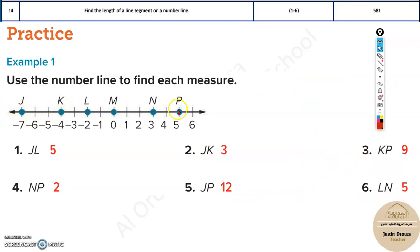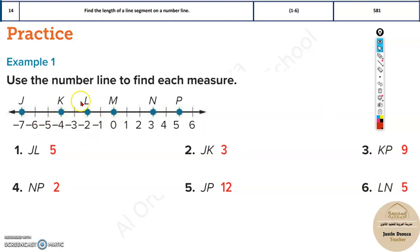If it's too big, say K to P, you can use the formula: the second point P minus the first point K. Since K is negative four, you have to add the two values up.